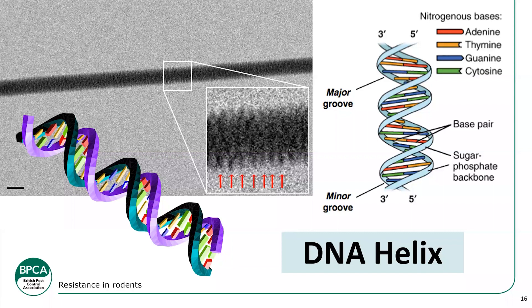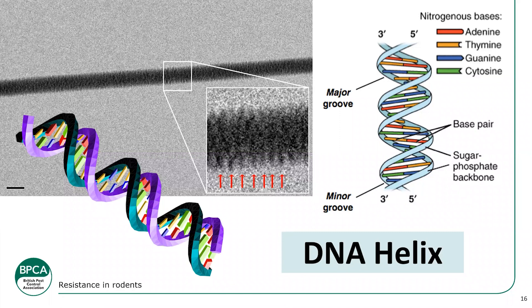When they first started doing this testing, they actually required a live animal. Nowadays the process has been streamlined by researchers in Germany who can identify resistance through DNA sampling from a tail sample. This made the process much easier and opened it up to a wider audience, including pest controllers. There's another important fact about DNA: it comes from two parents — the DNA helix has two strands, one from each parent.